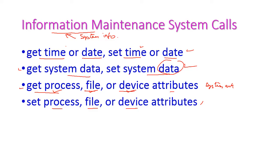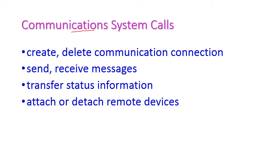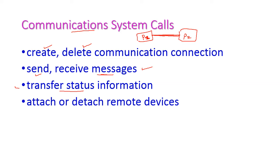The next category is communication system calls. Communication means two processes want to communicate with each other — for example, process P1 and process P2 want to communicate. For that we need to establish a connection, so we have create communication connection and delete communication connection system calls. How communication takes place is through sending and receiving messages, so we have send message and receive message system calls. We also have a transfer status system call to get the status of how the message transfer is taking place.